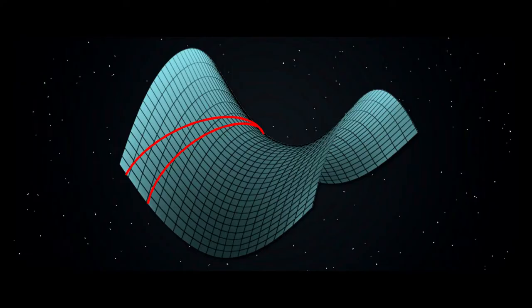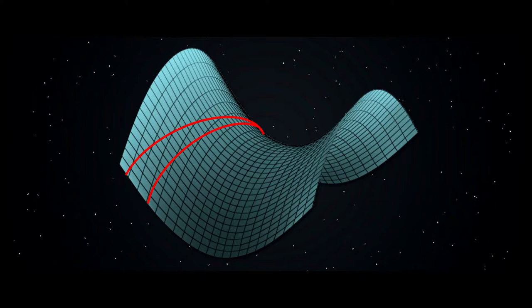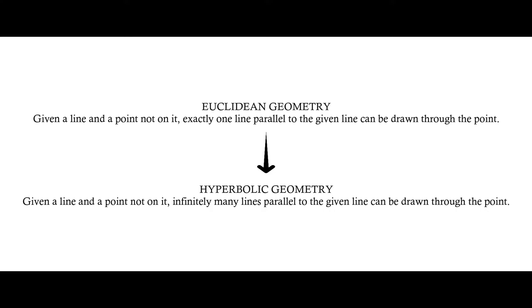In this geometry, the surface is negatively curved. This leads to a variation of Euclid's parallel postulate. According to this, for a given straight line and a point not on the line there exist an infinite number of straight lines through the point parallel to the original line.